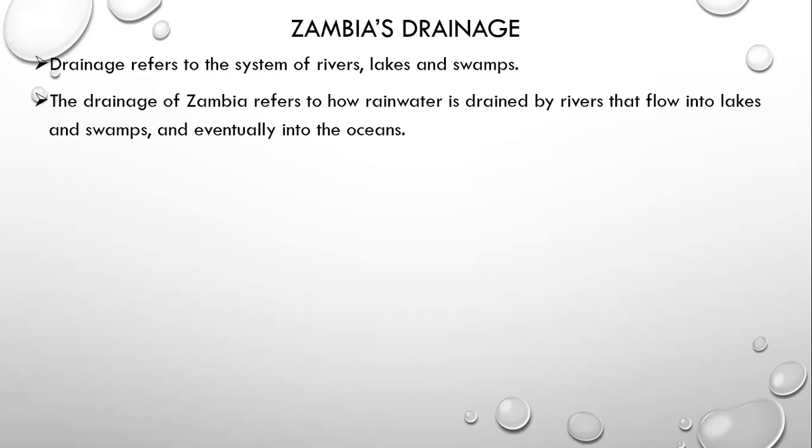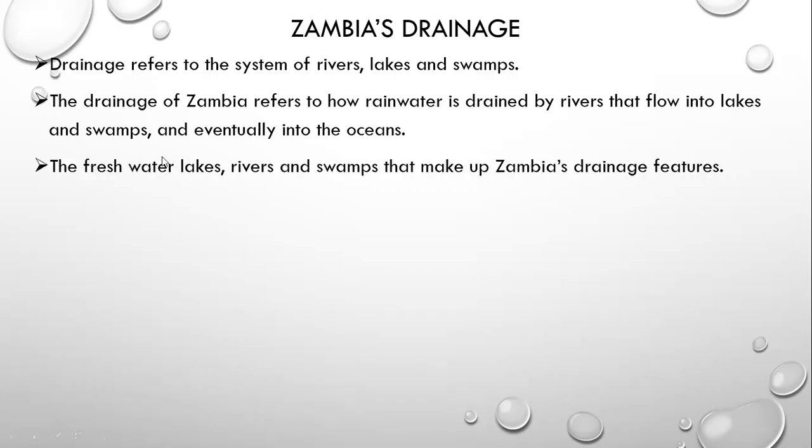When it rains, the water that finds itself on the land is drained by water bodies such as rivers and lakes. The water on the land finds its way to the rivers and lakes — that's why we call these rivers and lakes drainage features, because they drain the water from the land. The freshwater lakes, rivers and swamps make up drainage features.